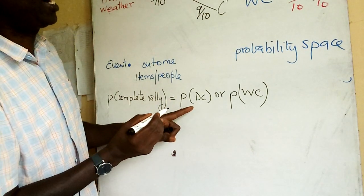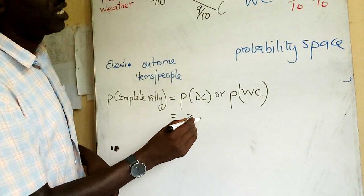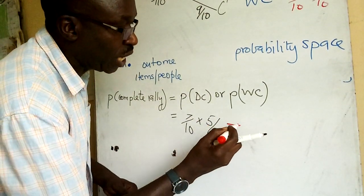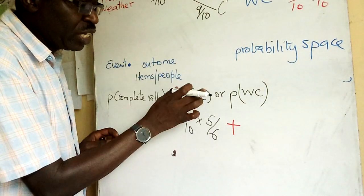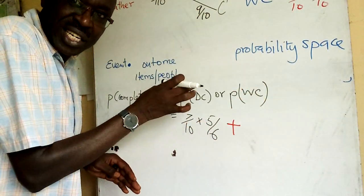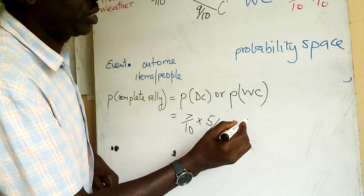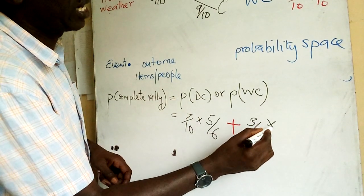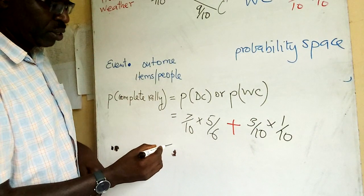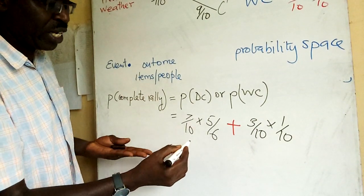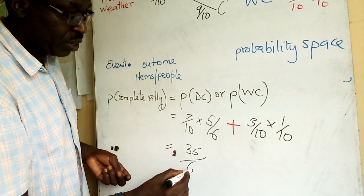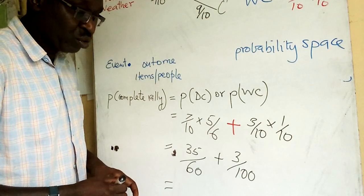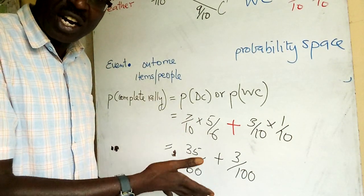The completing branches give us: 7 over 10 times 5 over 6, or 3 over 10 times 1 over 10. Since these are two separate possibilities, we use 'or' and add them. So you have 35 over 60 plus 3 over 100. You have to simplify, add and simplify, for you to score full marks.